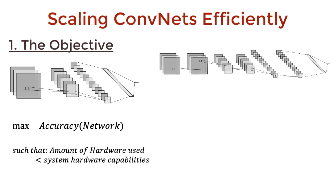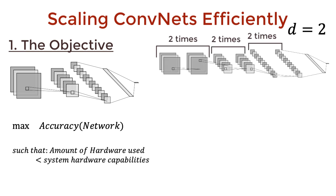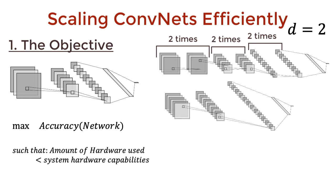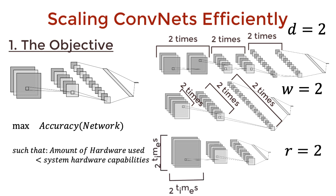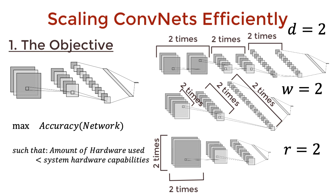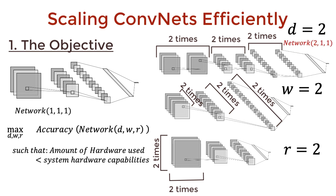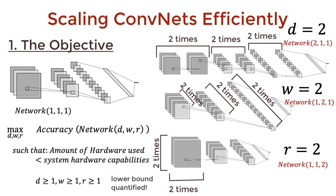We can increase the number of layers in the network, and let's call the scaling factor D for depth. We can increase the number of channels in the network, and let's call the scaling factor W for layer width. And third, we can increase the length or breadth of each layer, with the scaling factor R for resolution. We can write this network as a function of D, W, and R. So the function N(1, 1, 1) will give us the base architecture, which is basically scaling everything by a factor of 1 — and this is the lower bound. The objective is to find the optimal scaling values of D, W, and R that give the best performance with these hardware constraints.